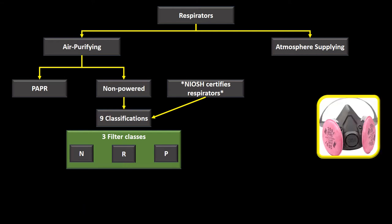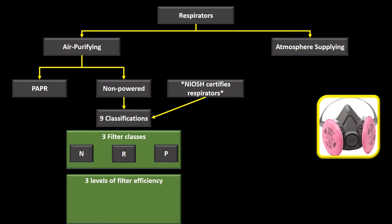Each filter class has three levels of filter efficiency. The top level is 99.7%, then 99%, then 95%. All three filter classes — N, R, and P — have respirators available at each of these three efficiency levels.